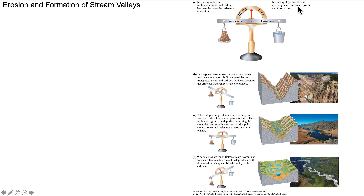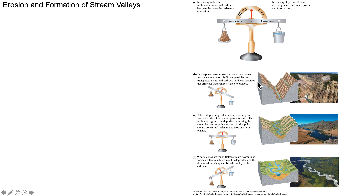Stream power, on the other side of this balance, is related to increasing slope and stream discharge. Steepening the stream increases its gradient, and we might also increase the volume of water or ice flowing through a valley. Ultimately one side tips the scale: more water and steeper slope means more stream power; less water and shallow slope means more resisting power. In steep wet terrains, stream power overcomes resistance to erosion, sediment particles are transported away, and bedrock hardness becomes the principal factor in resistance.